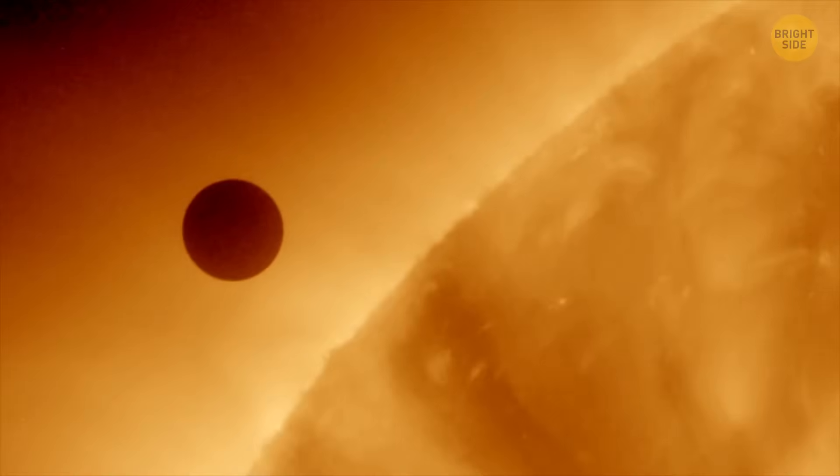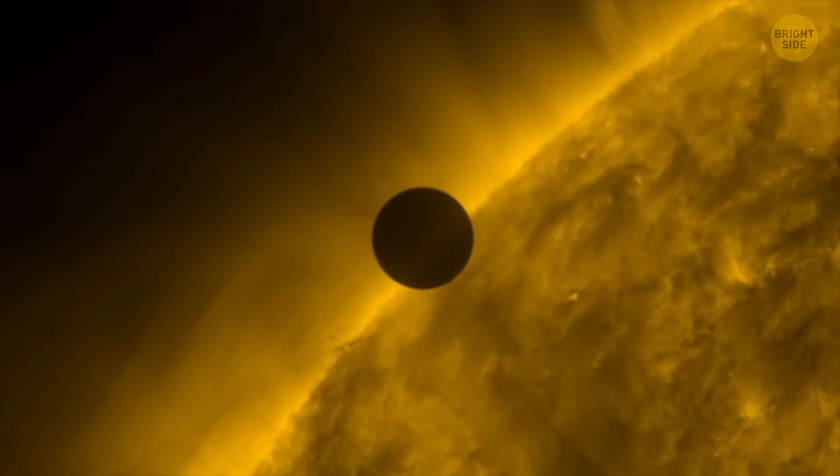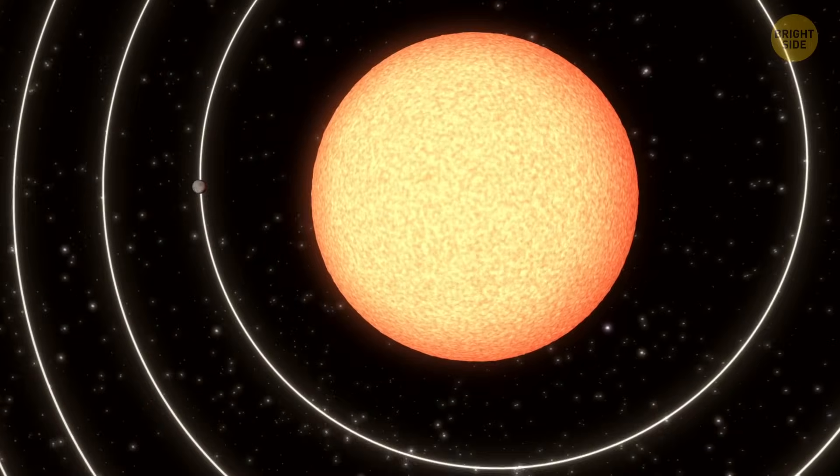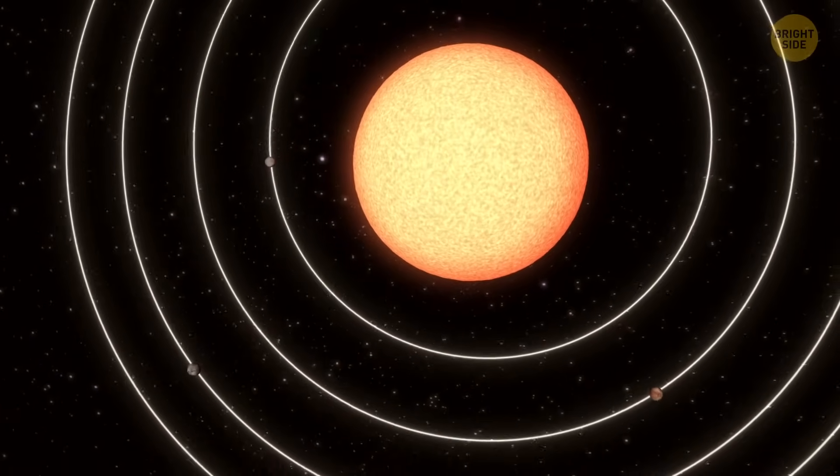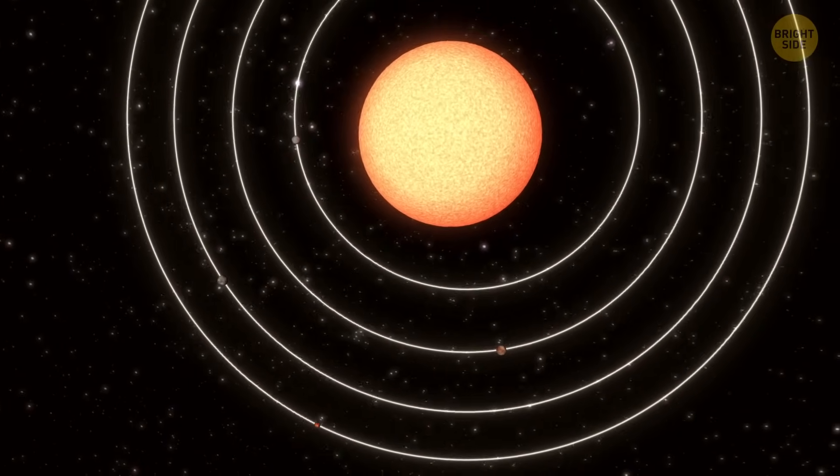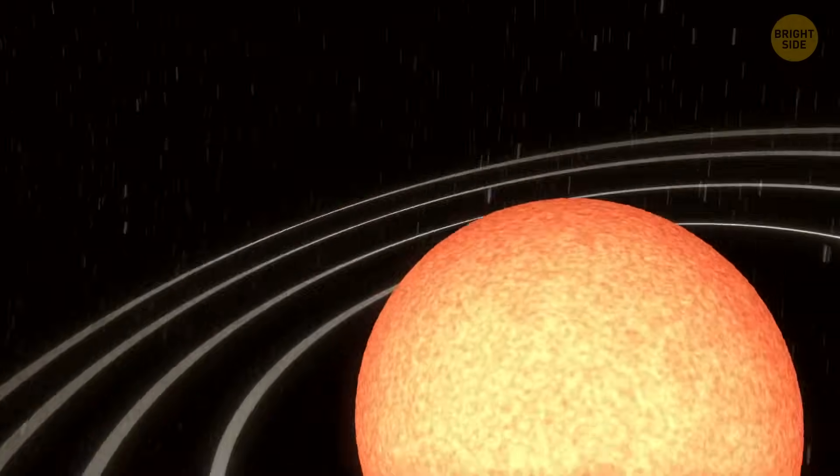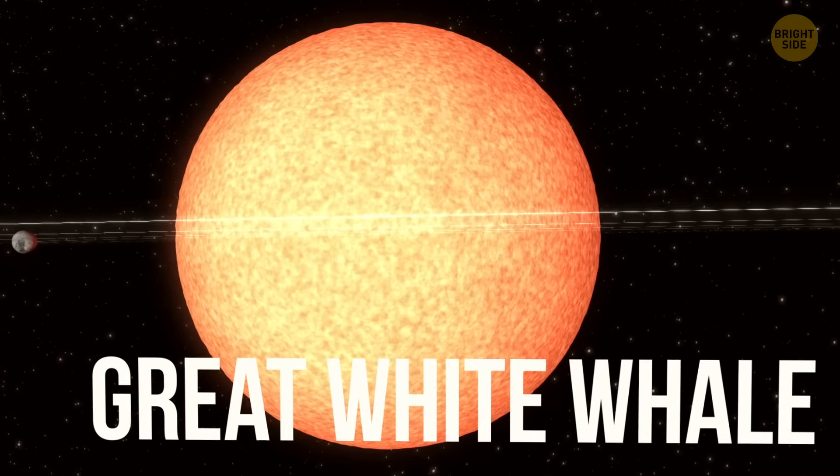Normally, astronomers spot exoplanets when they catch them crossing in front of their stars and blocking some light. But Barnard's star is tricky, because in our view, it's like we're looking from above the system, so its planets don't block the light in the usual way. That's why they call it the great white whale of planet hunting.